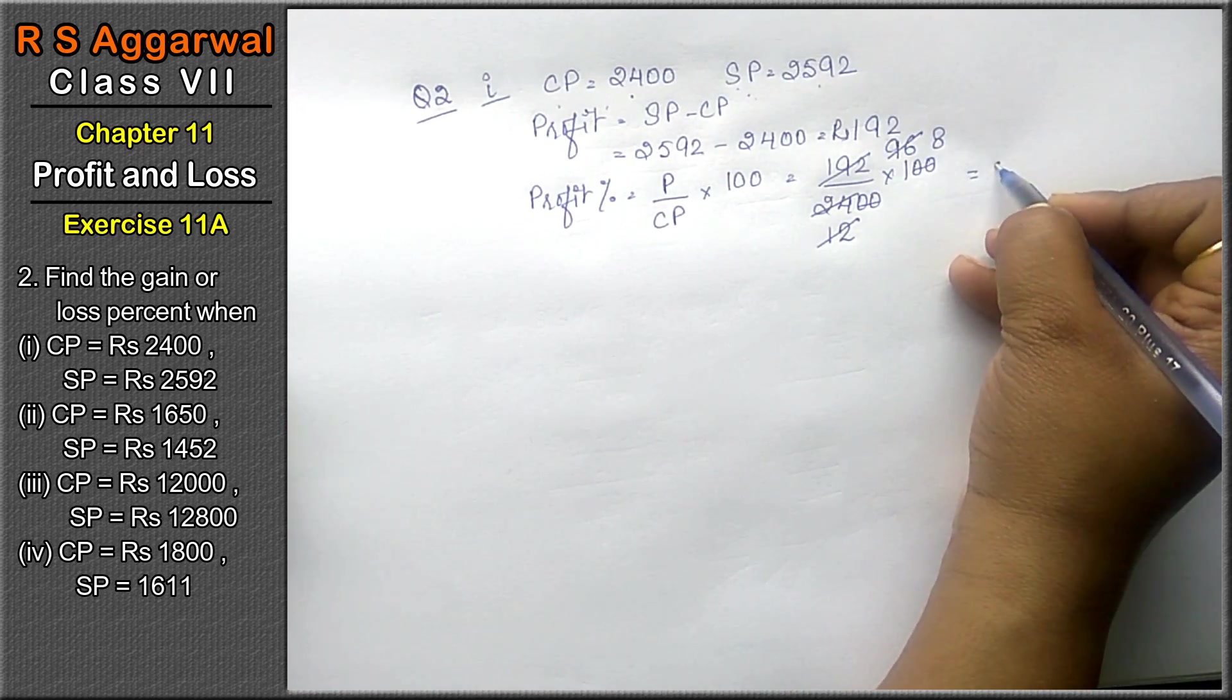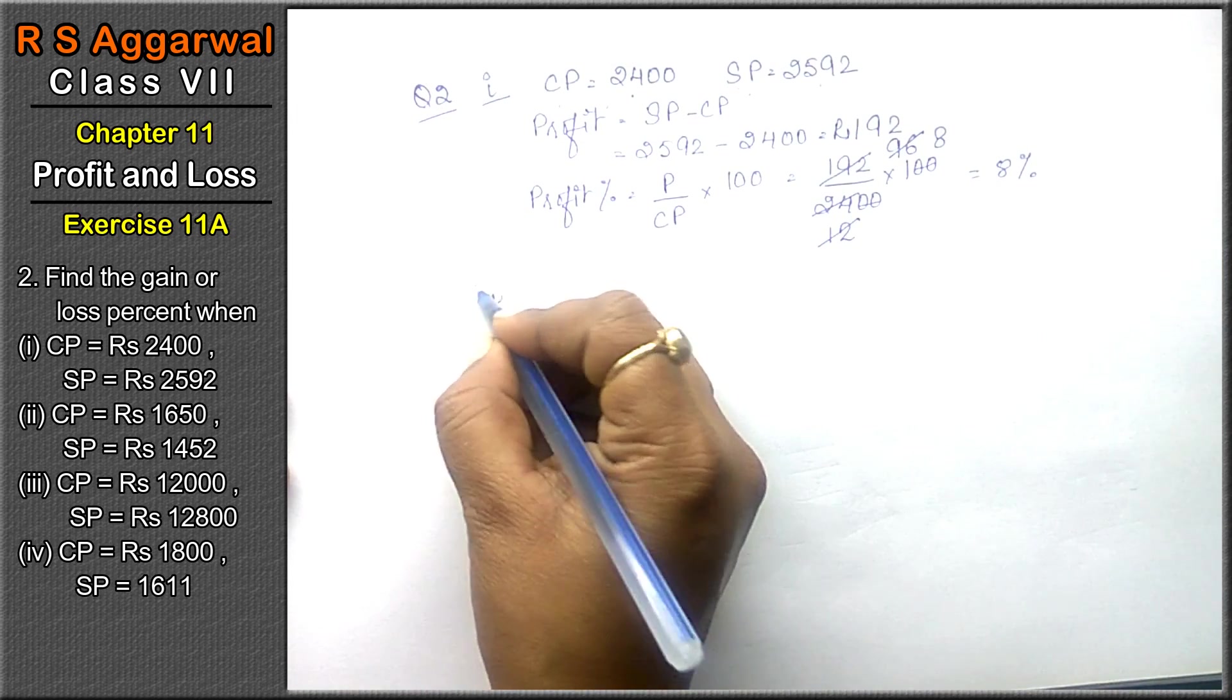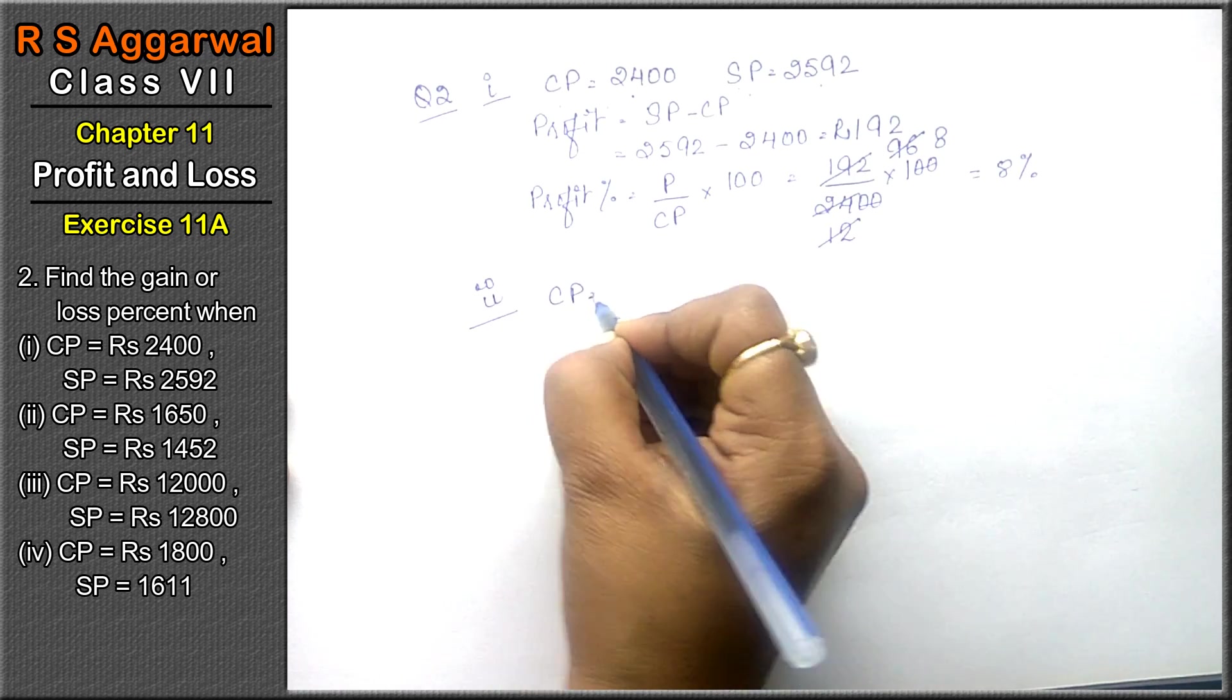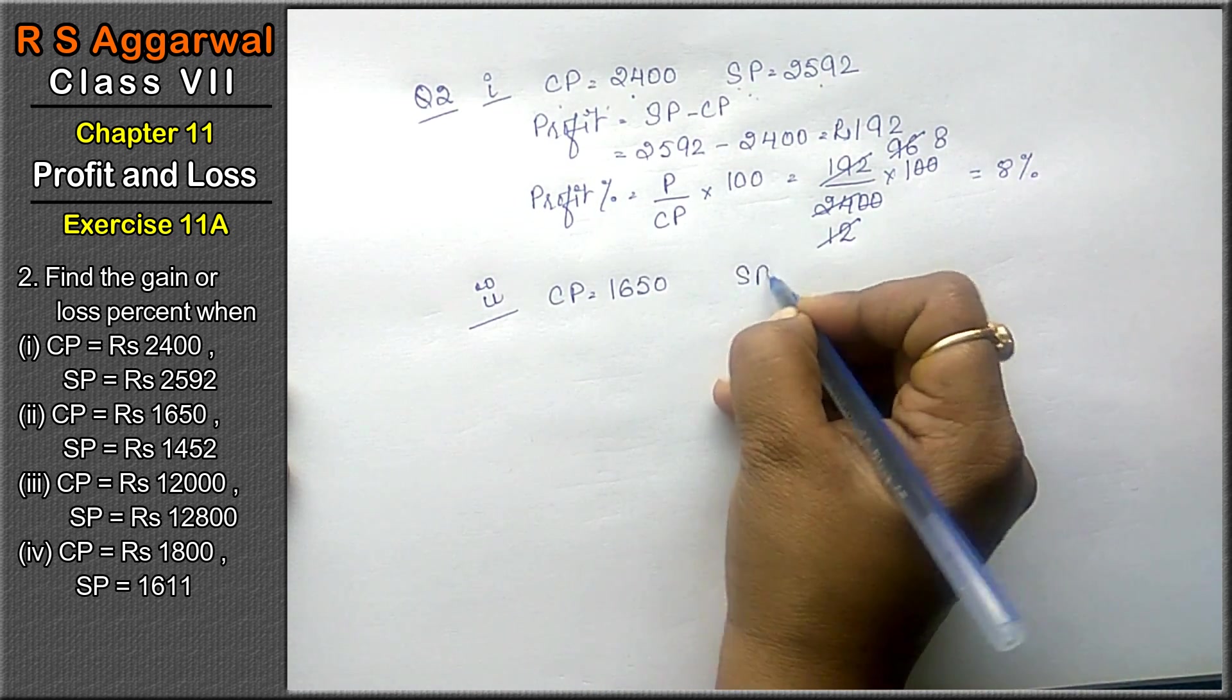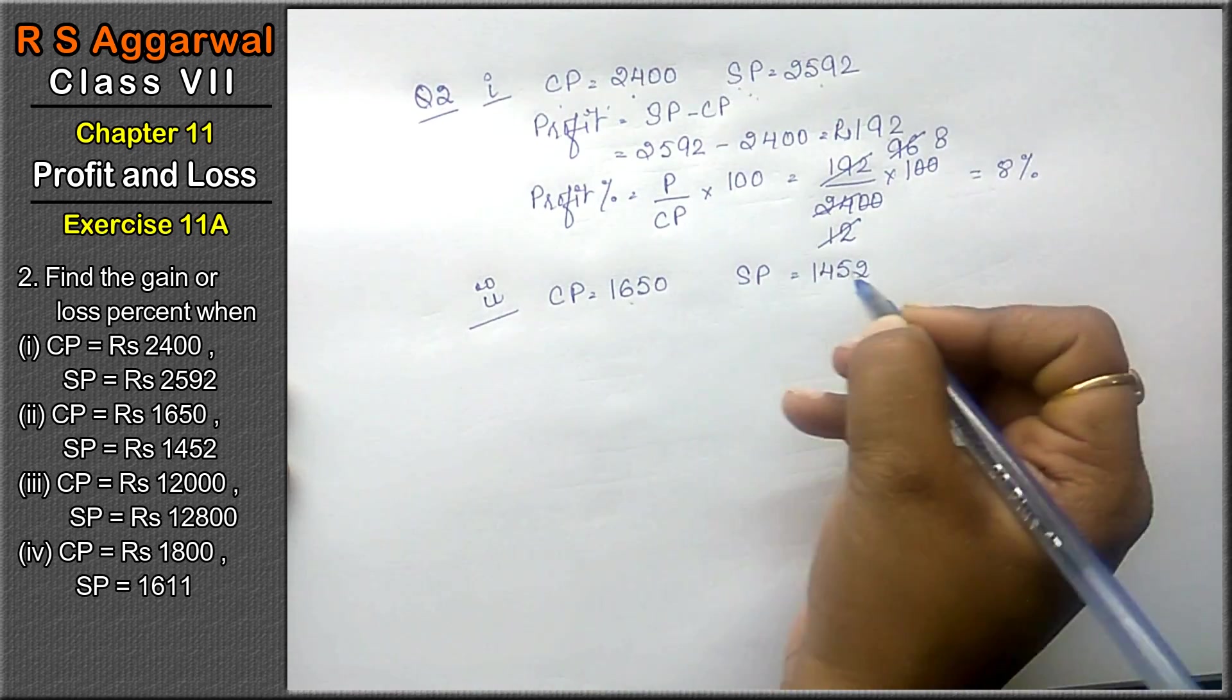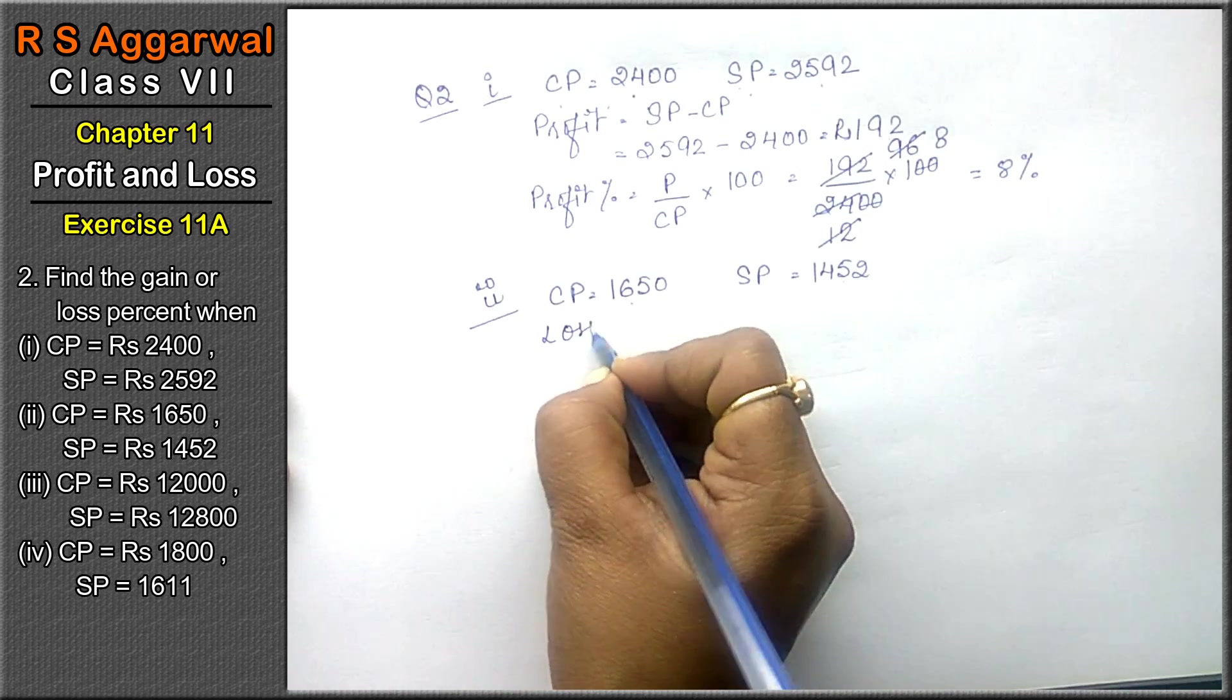Let's do second part. CP is 1650 and SP is rupees 1452. Here CP is more and SP is less, then we are getting loss.